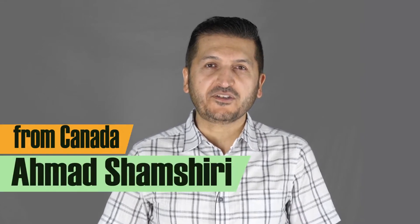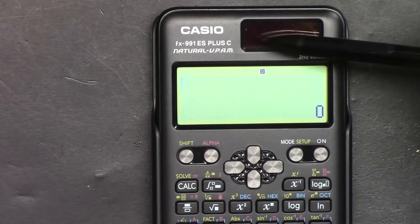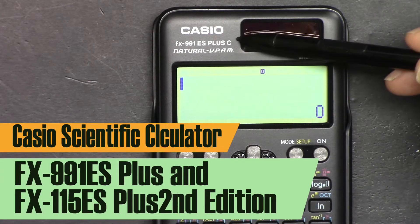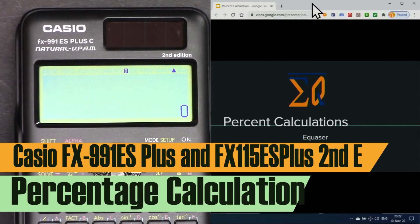Hi, welcome to a video tutorial from Equasor. My name is Ahmad Shamshiri. In this video, we are going to use this Casio FX-991ES Plus second edition scientific calculator to do percent calculations in three different ways. Let's get started.